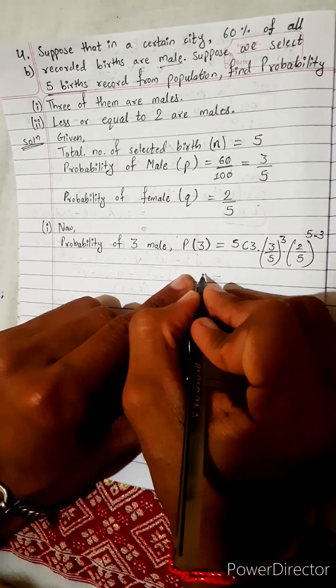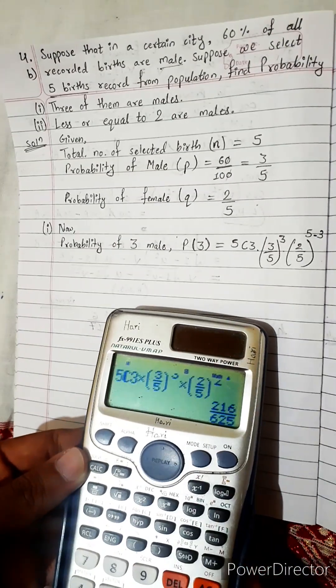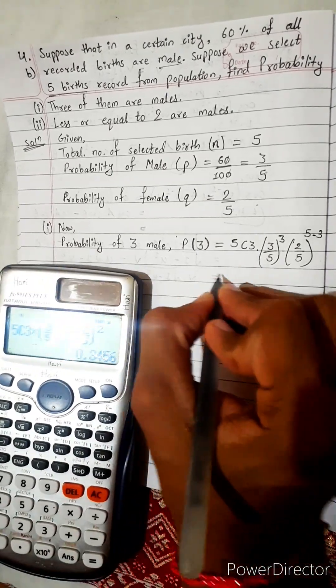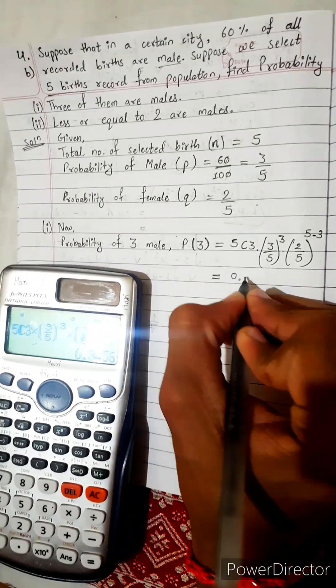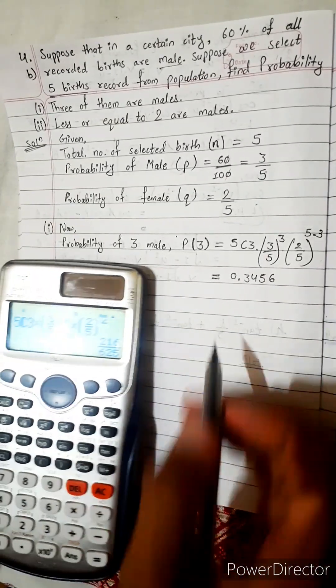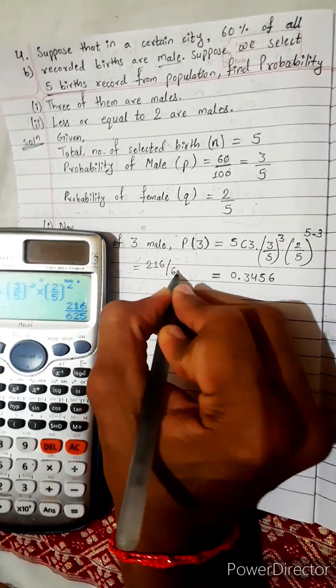Now directly use calculator, we should not waste our time. 216 divided by 625, very big number. Let's write in decimal, this is 0.3456. If somewhere fraction also written, then okay. 216 by 625.